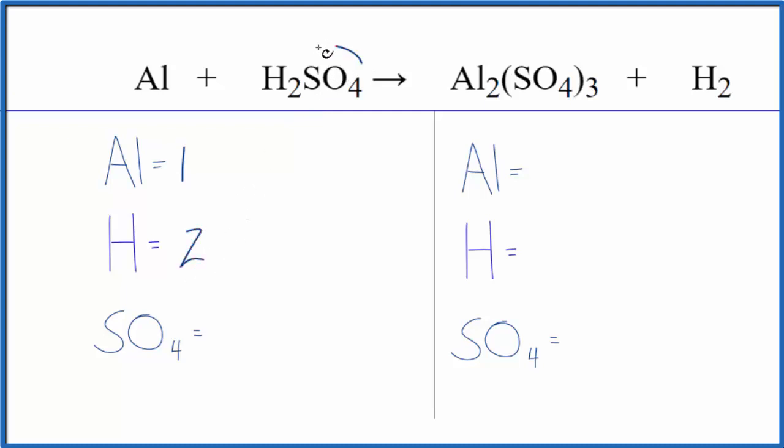And then because we have this SO4 here and again here, this is a polyatomic ion, it's called the sulfate ion, we can just count it as one thing.